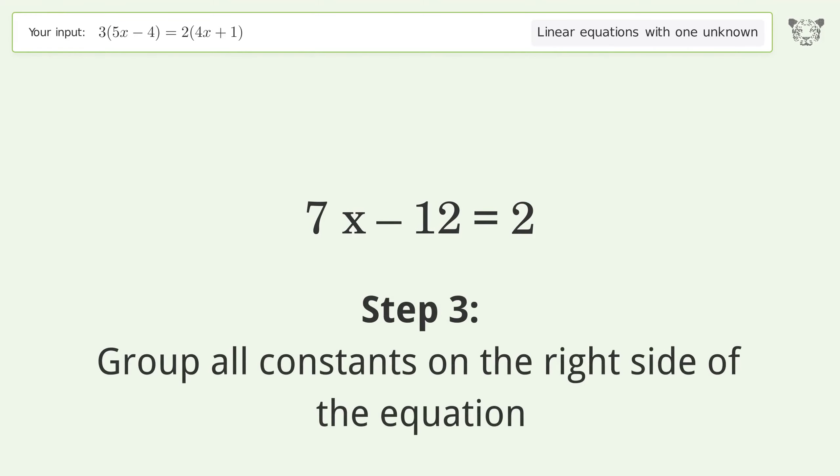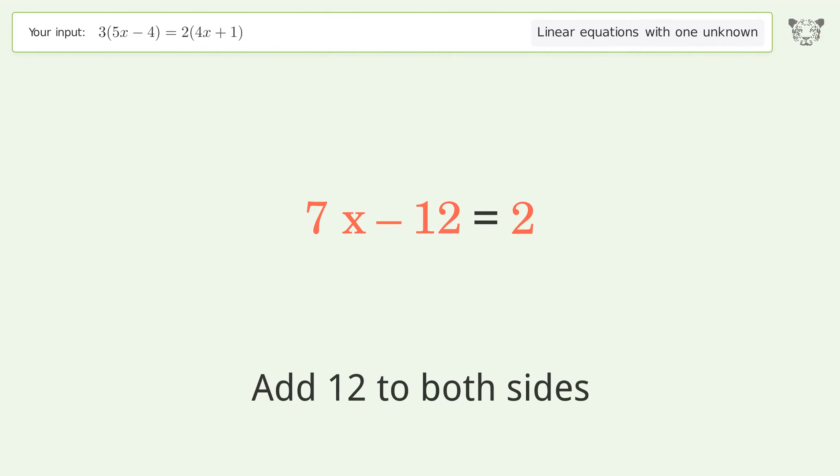Group all constants on the right side of the equation. Add 12 to both sides. Simplify the arithmetic.